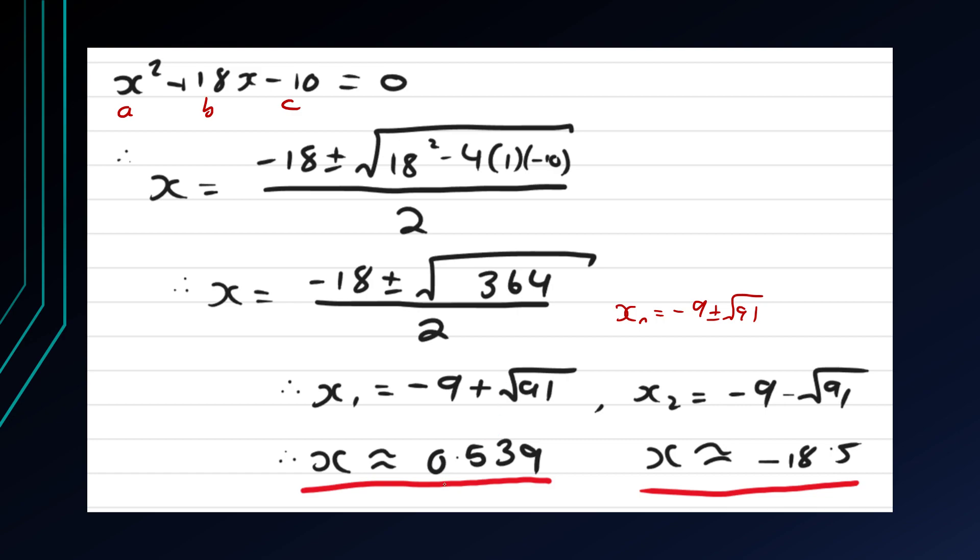Taking a look at these significant figures, we start at the 5 here. So this 5 is our starting point for significant figures. So we go 1, 2, 3, and we stop there.